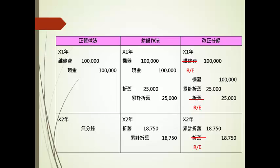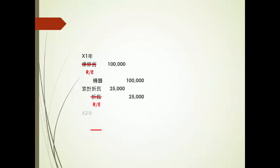题目说这个错误是X3年初才发现的，换句话说X2年都已经结账了，X1年当然也是结账了。如果是在结账之后才发现，所有的虚账户（收入费用类）全部已经结清，通通把它转到保留盈余或前期损益调整来取代。因此维修费换成保留盈余，折旧换成保留盈余。